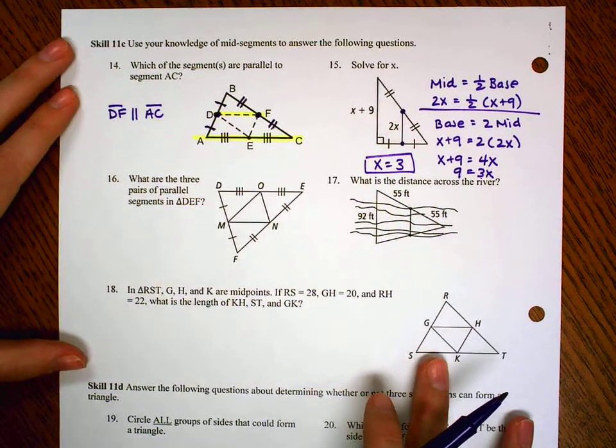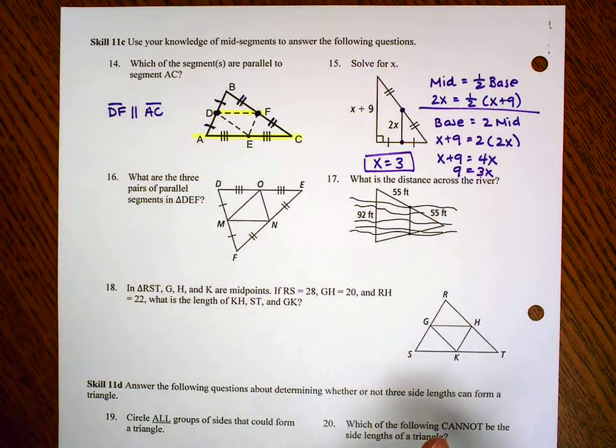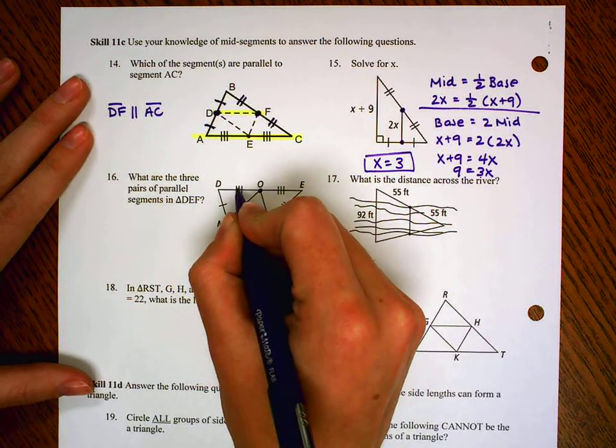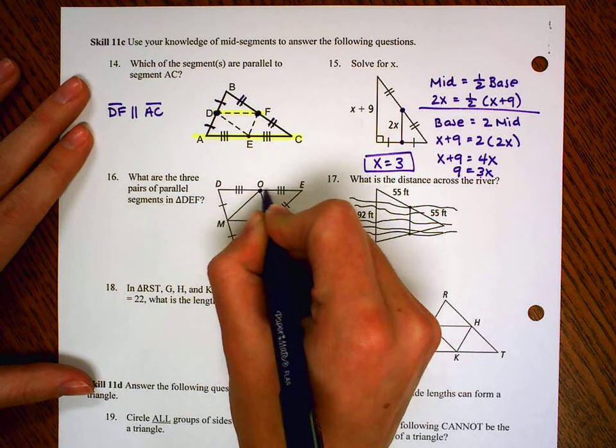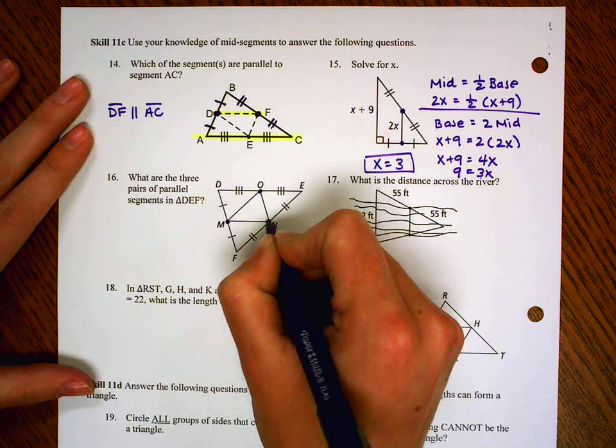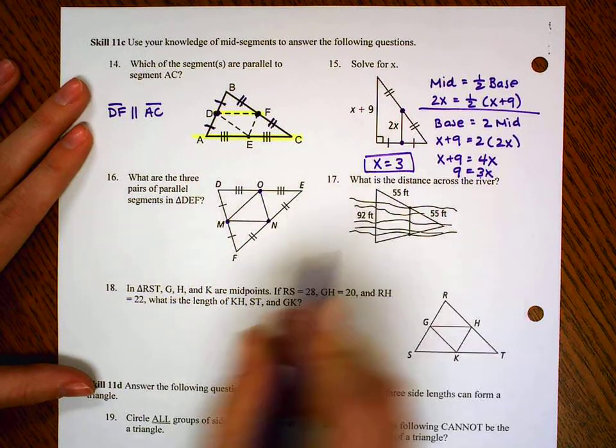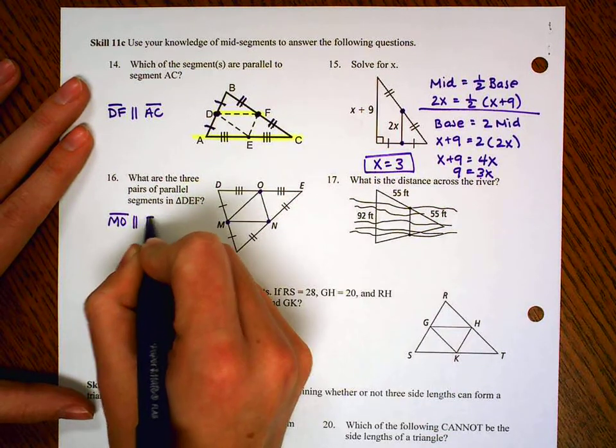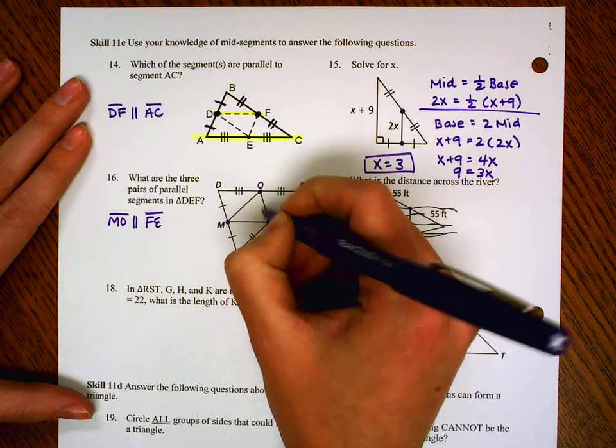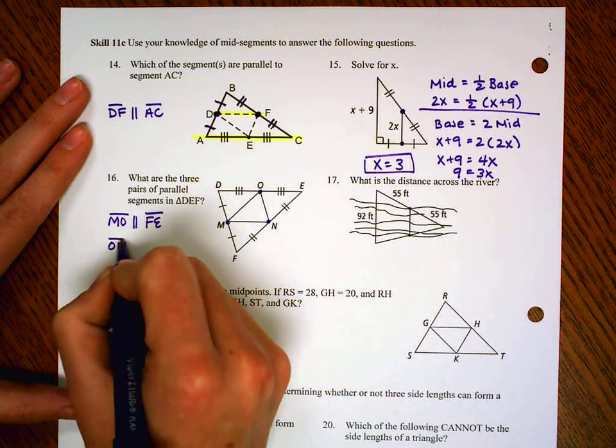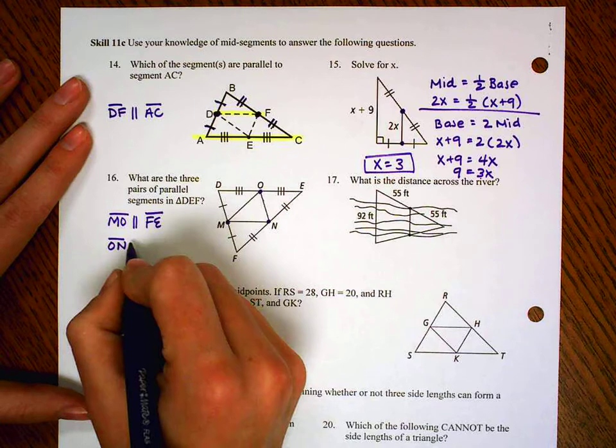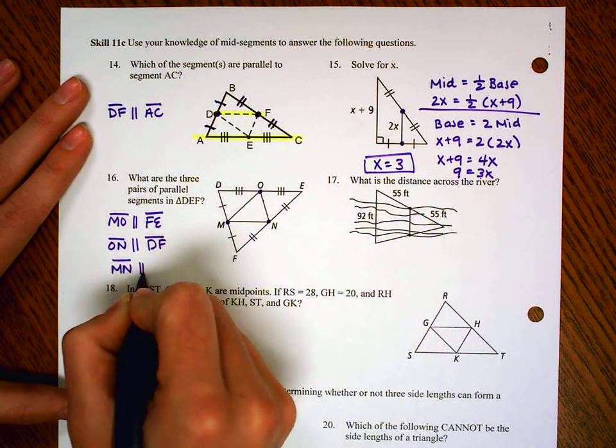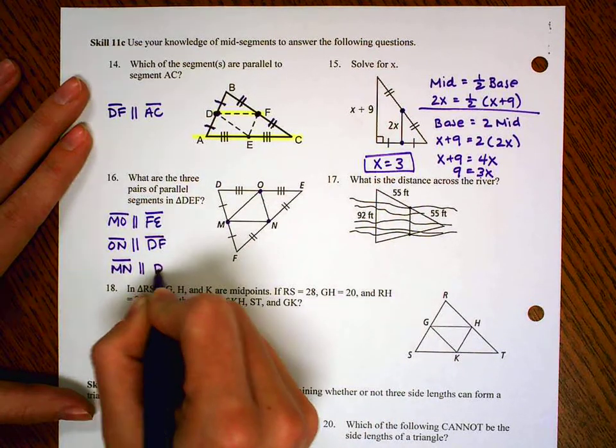Number 16. What are the three pairs of parallel segments in DEF? Well remember, a mid-segment is always going to be parallel to its base. This is going to be the midpoint of this side, because the three tick marks here and here mean that this is the same as this, so that's the midpoint. M is the midpoint of this side. N is the midpoint of this side. So these are three mid-segments. MO, segment MO, is going to be parallel to segment FE. Here's segment ON. ON is a mid-segment. It's going to be parallel to this base, DF. And then MN, segment MN, is going to be parallel to this base, DE. So segment DE.